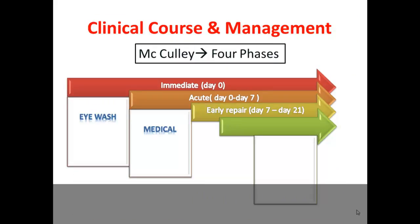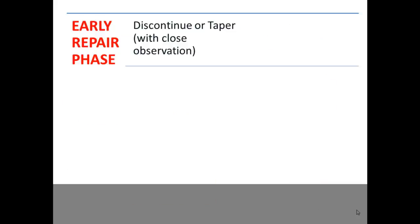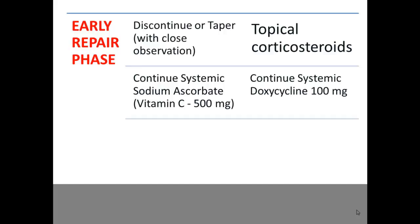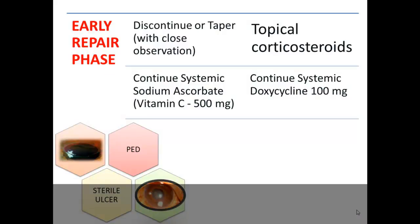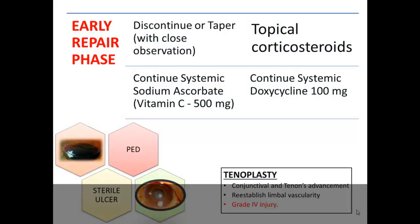In the early repair phase, medical treatment continues with tapering. Steroids are tapered cautiously from day 7 to day 21, as there is risk of sterile stromal ulceration. Vitamin C and systemic doxycycline 100mg are continued. Watch for persistent epithelial defect or sterile ulcer. A procedure that may be needed here is stenoplasty — a Tenon's advancement to re-establish limbal vascularity, usually required in grade 4 injuries.